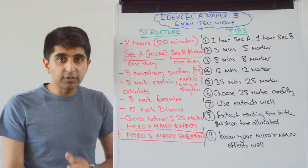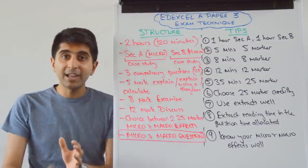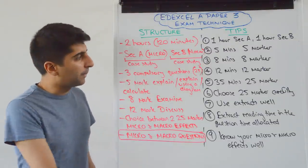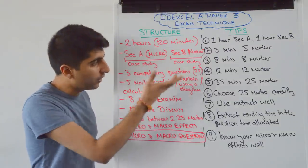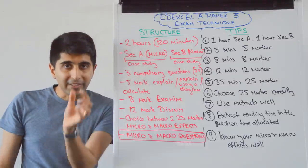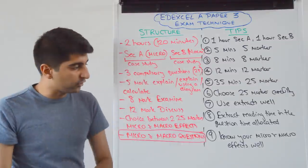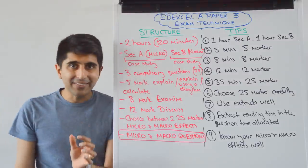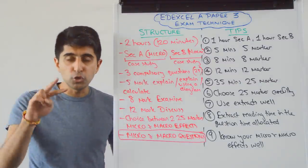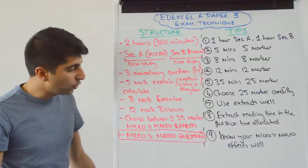Those three questions in both Section A and Section B are worth 25 marks in total. At the end of Section A and at the end of Section B, there are going to be two 25-markers thrown at you.